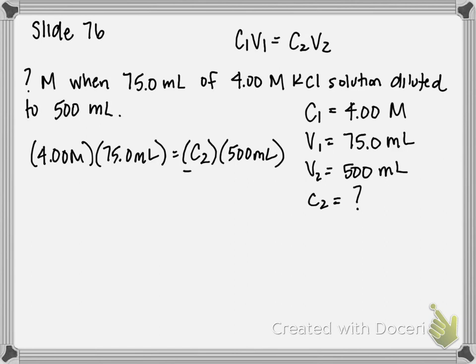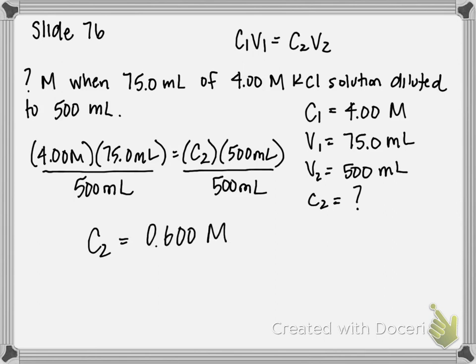So to get C2 by itself, we're going to divide both sides by 500 milliliters. And if you perform that calculation—4 molar times 75 milliliters divided by 500—you should get approximately 0.600 molar.